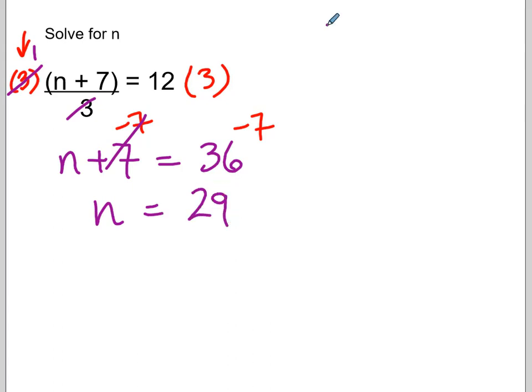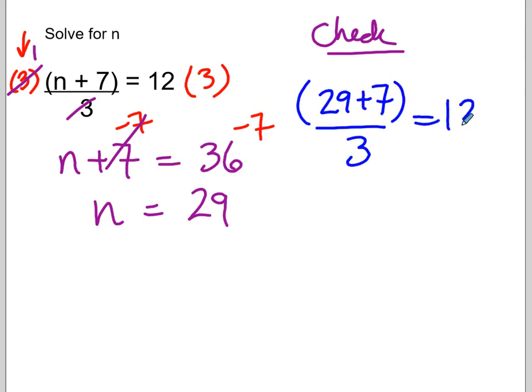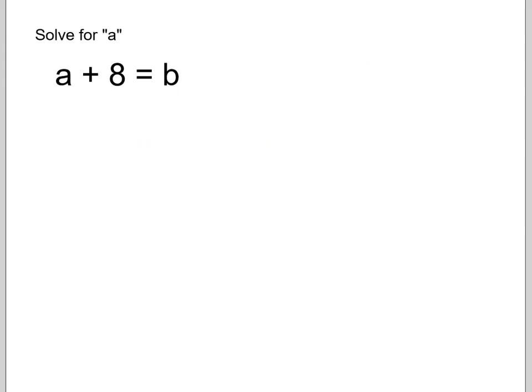Okay, and again, if we did a quick check, I could put that 29 back into the original. Just like that. 29 plus 7, this is 36 on the top. 36 divided by 3 is 12. And again, you can see the left side and the right side have to balance.